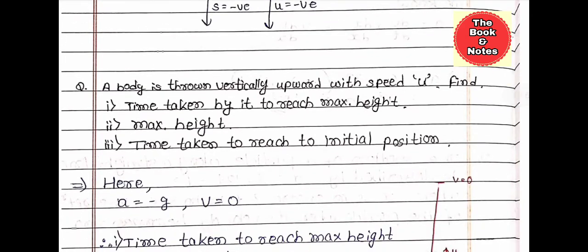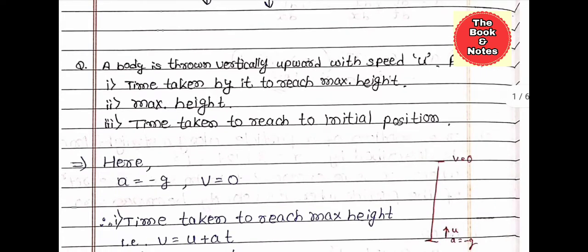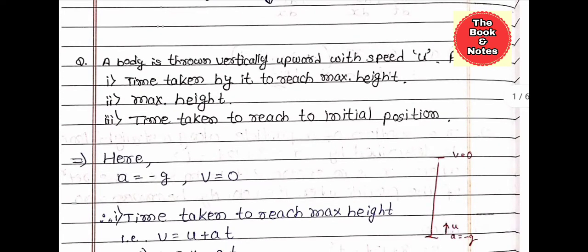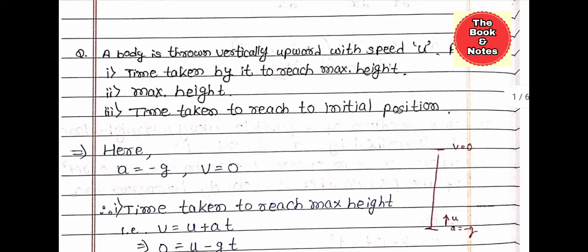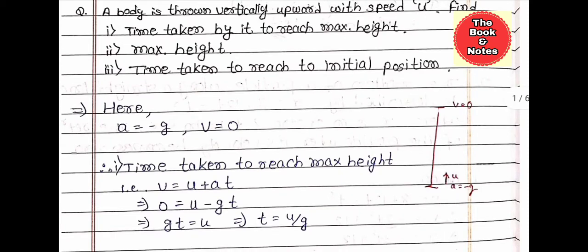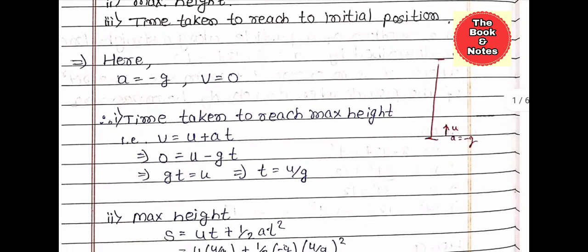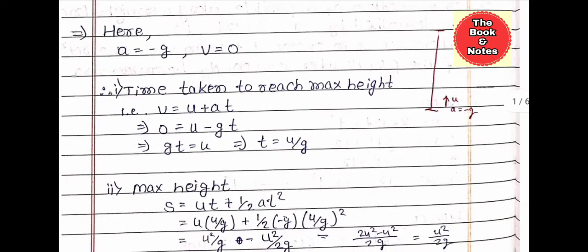A body is thrown vertically upward with speed u. Find: (1) time taken to reach maximum height, (2) maximum height, and (3) time taken to reach the initial position. Here is the solution — you can pause and watch it.